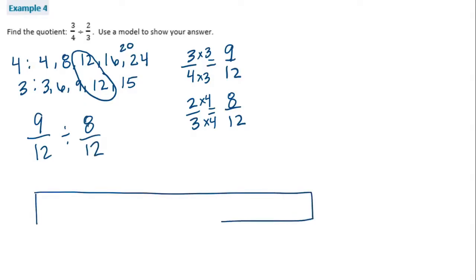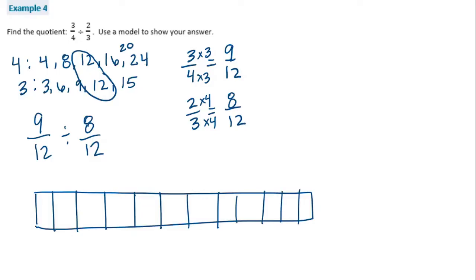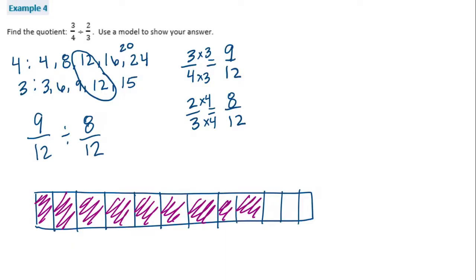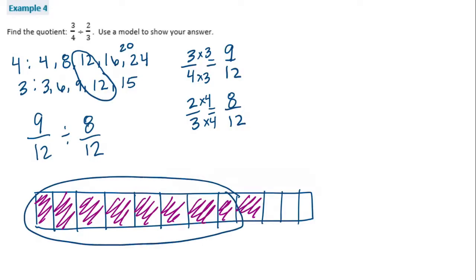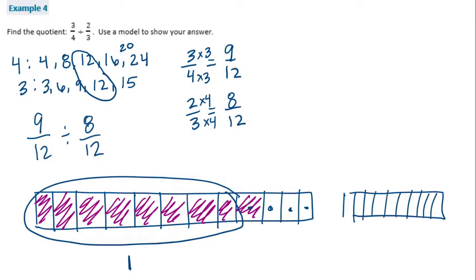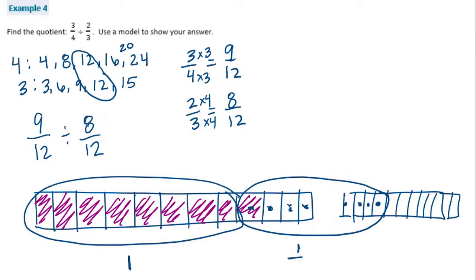Drawing the model: shade in nine-twelfths. We're splitting into groups of eight-twelfths. One group of eight can be made, then for the next group we only have one shaded out of eight. So the answer is one and one-eighth.